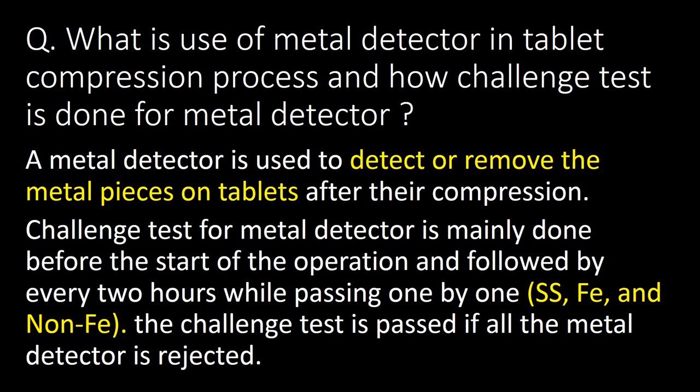What is the use of a metal detector in tablet compression, and how is the challenge test done? A metal detector detects and removes metal pieces from tablets after compression. The challenge test is done before the start of operation and then every two hours by passing three metal chips — SS, Fe, and non-Fe — one by one. The test is considered passed if all test metals are detected and rejected by the metal detector.